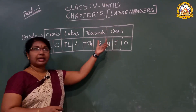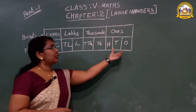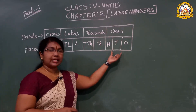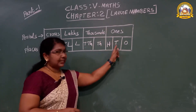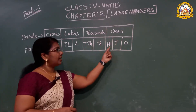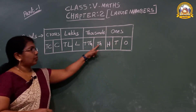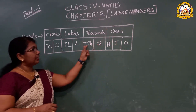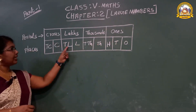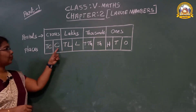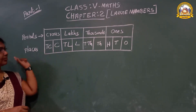In one period, how many place columns are there? Three. Ones, tens, hundred — that's the first period. Then thousand, ten thousand — second period. Then lakh, ten lakh — third period. Then crore, ten crore — fourth period.